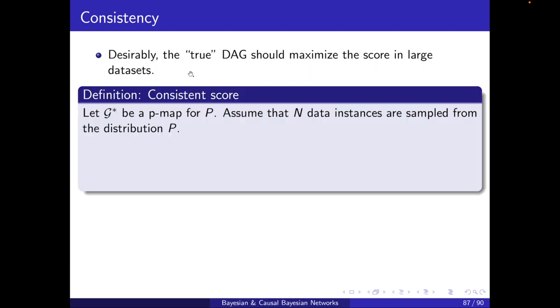So, let's define the notion of consistent scores. Let G* be a PMAP for P. Assume that N data instances are sampled from this distribution, meaning that our data set is from here and it's not noisy. The scoring function is consistent if the following holds as N goes to infinity with probability that approaches 1. This is basically almost surely.